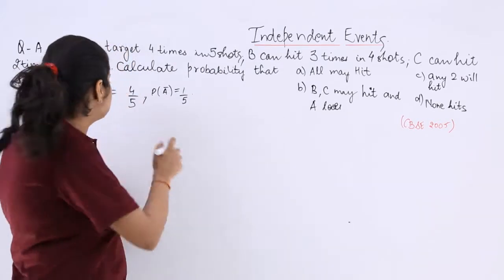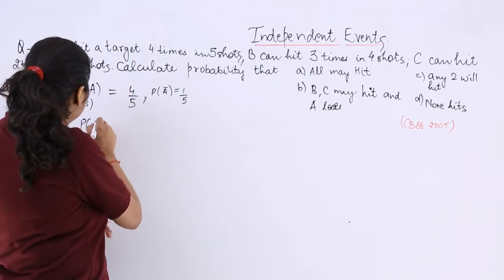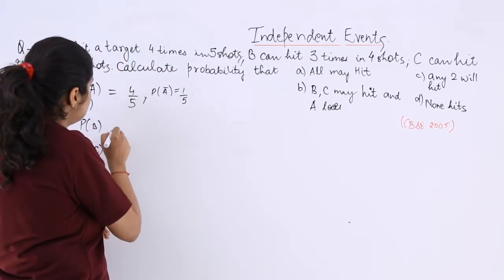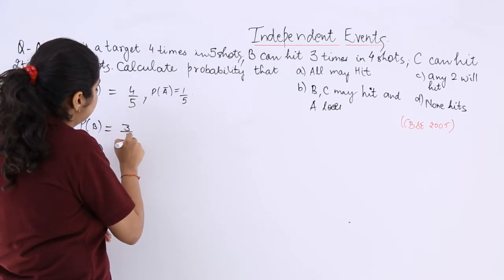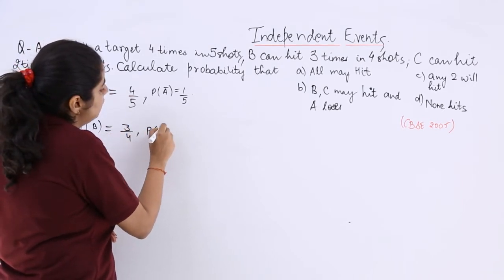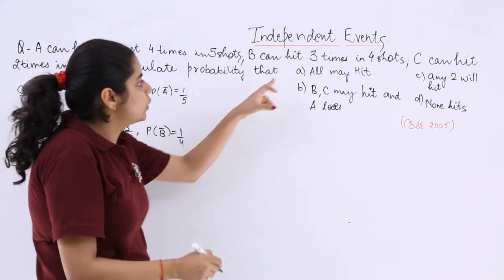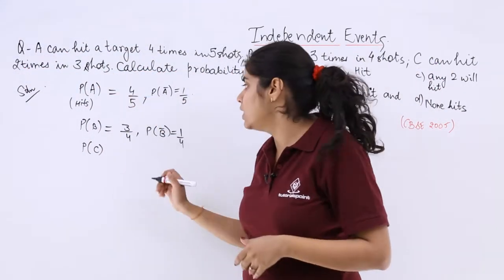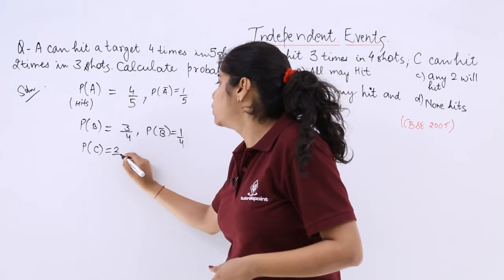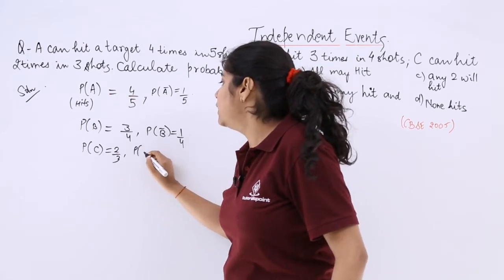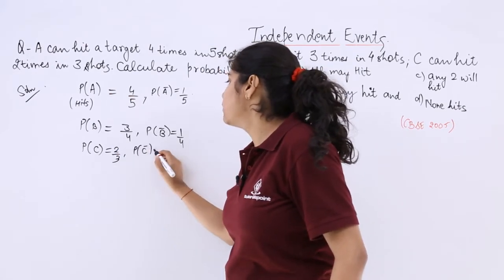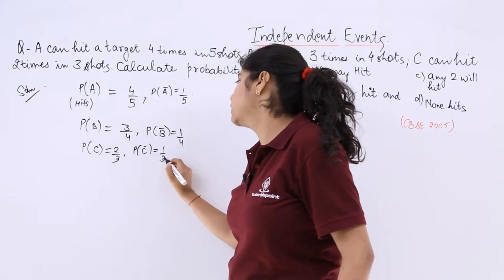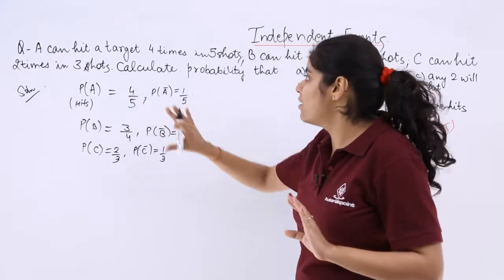Similarly I will do the same for B and C. So what is the probability of B? What is the probability of C? B can hit three times in four. B cannot hit one time in four. And C can hit two times in three. So probability of C is 2/3 but probability of not C is 1/3. Now you have these three.